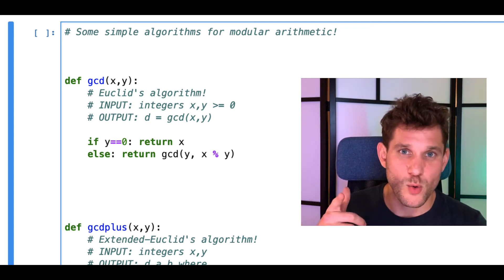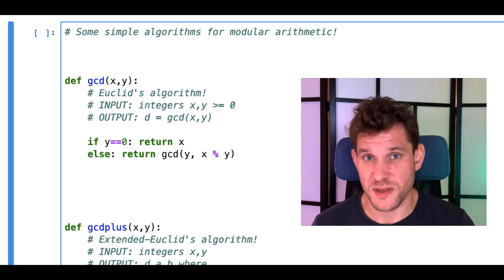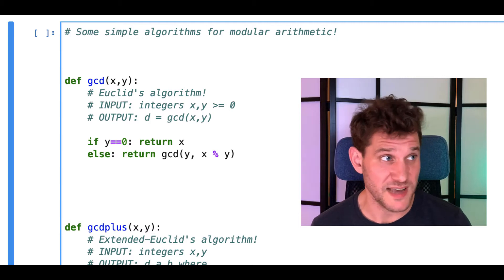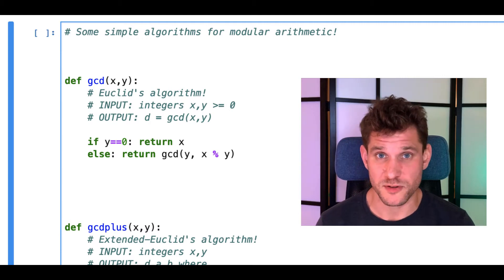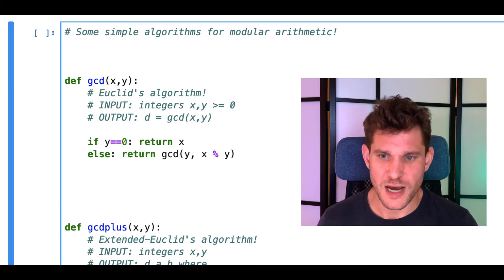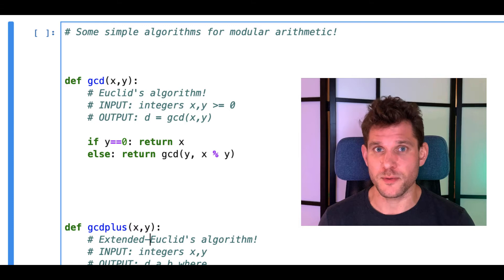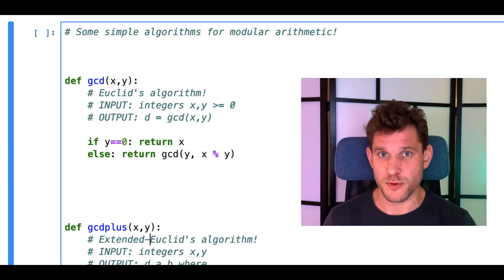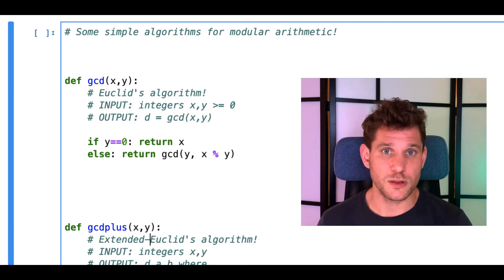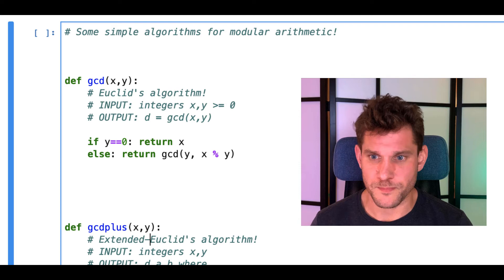Last time we talked about how RSA can be used to encrypt messages back and forth. We haven't proven exactly why that works. We're going to do that soon, but I just want to review some of the basic algorithms in number theory and modular arithmetic that we learned in the last lecture.